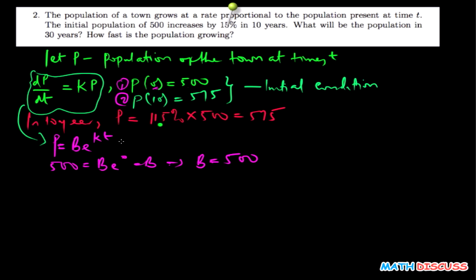I can rewrite this now: my new p is going to be p equals 500 e to the power kt. But we still have an arbitrary constant k. To clear this, I need to use the second condition, which says when the time is 10, the population is 575.